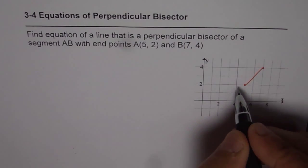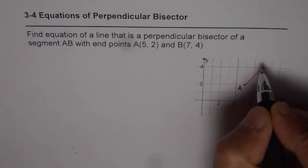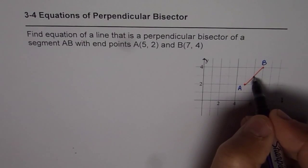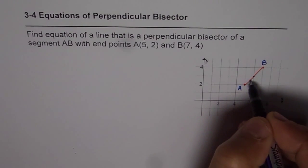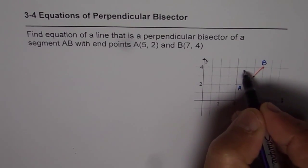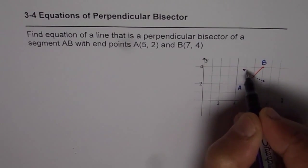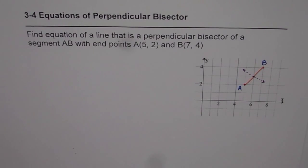We need to find the perpendicular bisector of this segment. Perpendicular bisector means it will go through the center of this segment, and perpendicular means it is at right angles to segment AB. So we have to find the equation of this line. First, let us use the midpoint formula to find the center of segment AB.